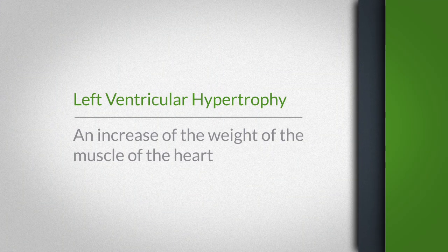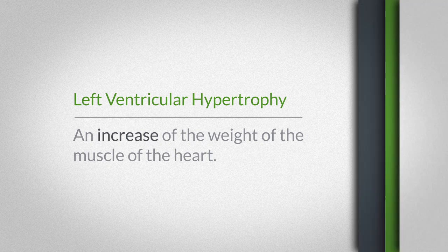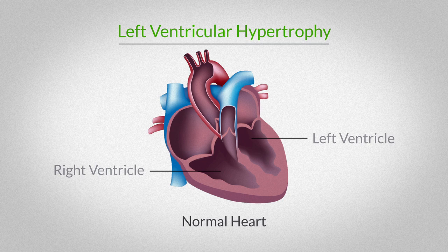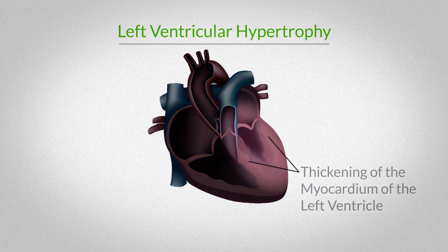Left ventricular hypertrophy is an increase of the weight of the muscle of the heart. With any muscle, the heart when it exercises hard increases in weight and thickness. When the heart has to work harder, this hypertrophy develops — it's really a pre-stage and can lead over long periods of time to heart failure.